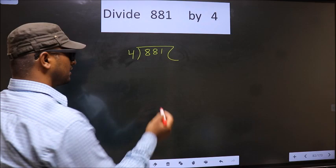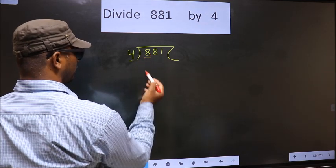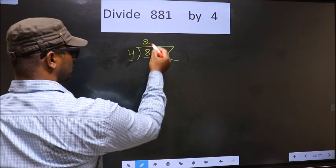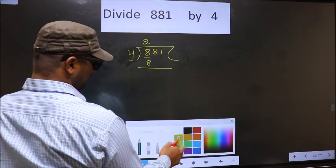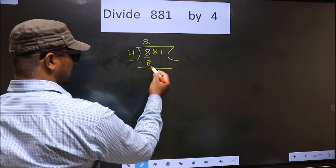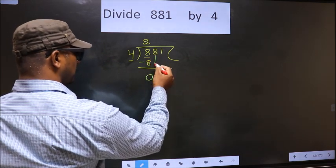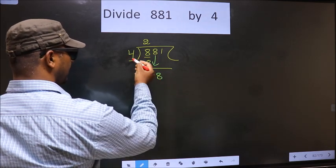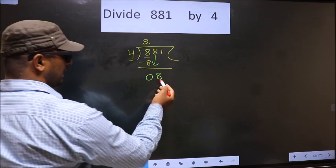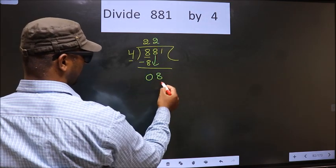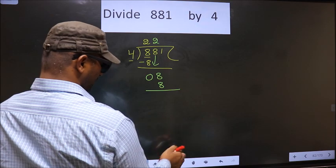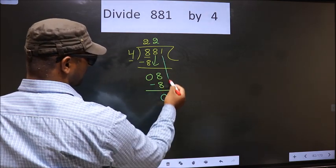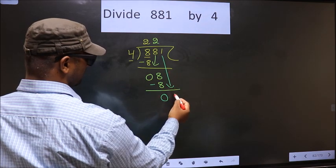Next. Now here we have 8. Here 4. When do we get 8 in 4 table? 4 times 2 is 8. Now you subtract 8 minus 8, 0. Now you bring down the next number, 8 down. So here 8, here 4. When do we get 8 in 4 table? 4 times 2 is 8. Now you subtract 8 minus 8, 0. Now you bring down the beside number. So 1 down.